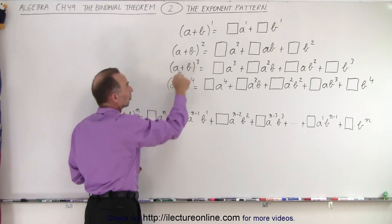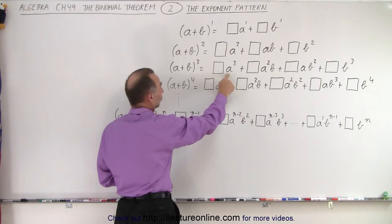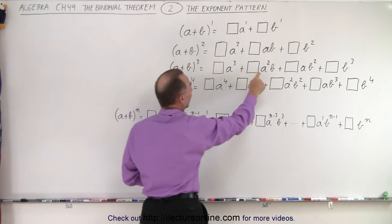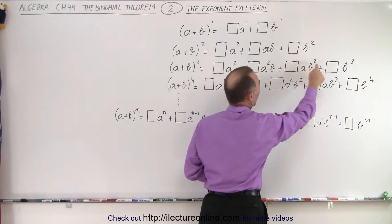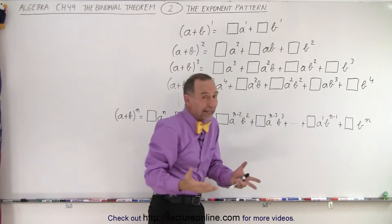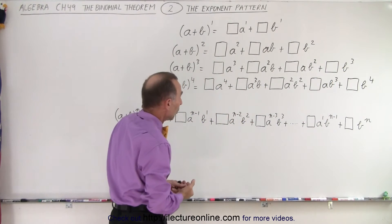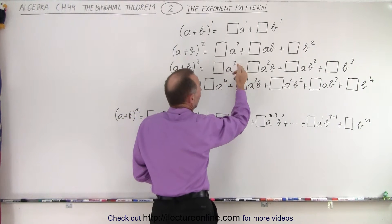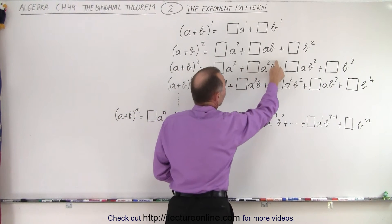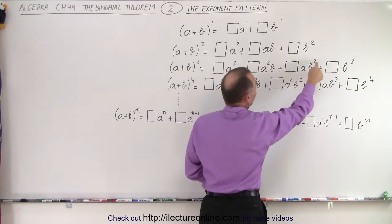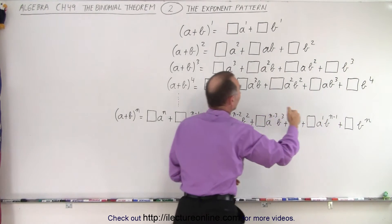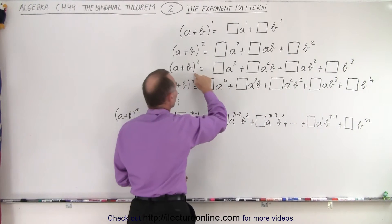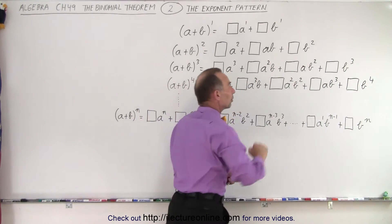When we get to (a + b) to the third power, we start with the first term to the third power. Then a squared, a to the first power, a to the zero power — which we don't write, since it's just one. On the second term, we start with b to the zero power, which we don't write, then b to the first, b to the second, and b to the third power. So the first term gets exponents in descending order, and the second term gets exponents in ascending order.